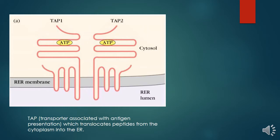Peptides degraded into 8 to 10 amino acid fragments need to be translocated from the cytoplasm to the rough endoplasmic reticulum (RER). This transport is carried out via TAP — the transporter associated with antigen presentation — which belongs to the family of ATP binding cassette proteins. TAP is a heterodimer protein consisting of TAP1 and TAP2, with multiple transmembrane segments. Its domain projects into the lumen of the RER, with the ATP-binding domain in the cytosol. TAP has the highest affinity for peptides of 8 to 10 amino acids, which is also the optimal length for MHC-1 binding. The purpose of TAP is the translocation of peptides from the cytosol to the RER.